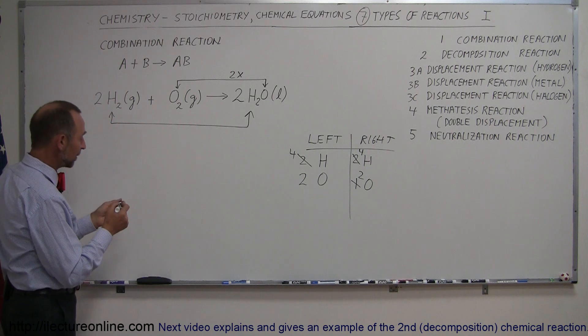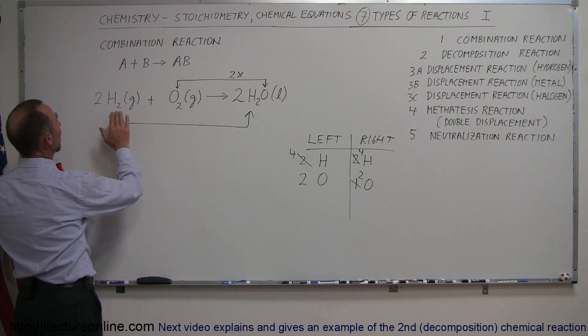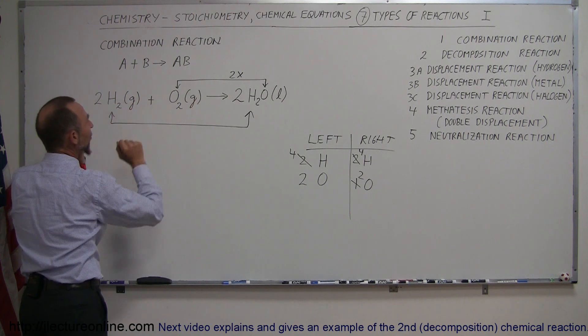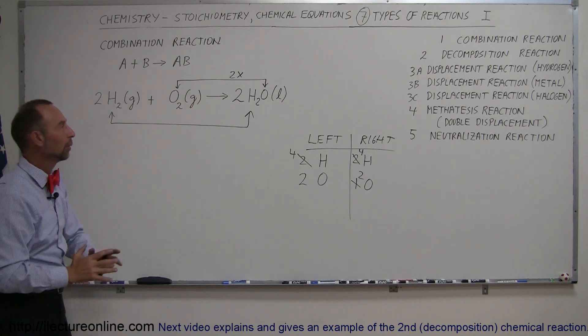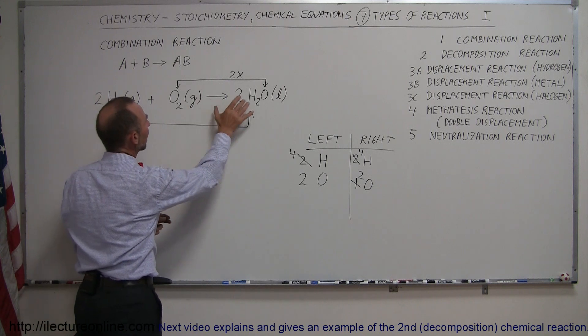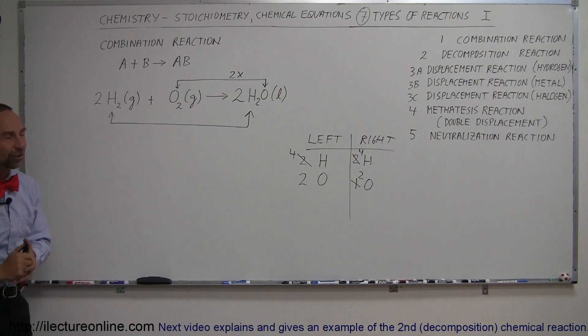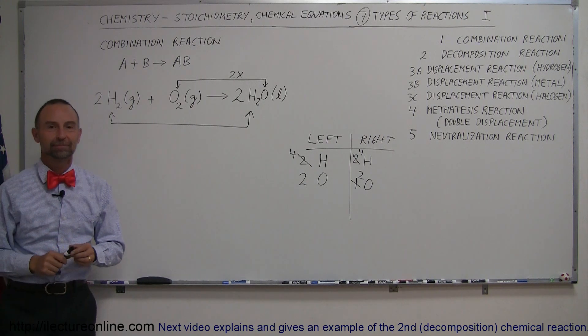So, why is this a combination reaction? Well, before the reaction started, we have two reactants. One that's hydrogen, one that's oxygen, and they were completely separate as gases. We combine them. When they're combined, they react, and they form water molecules. And so, this is what we call a combination reaction.